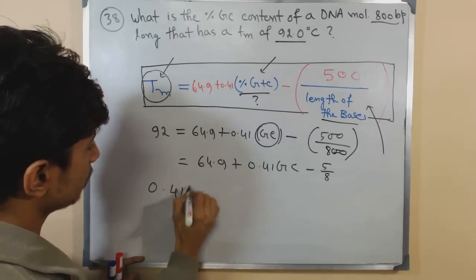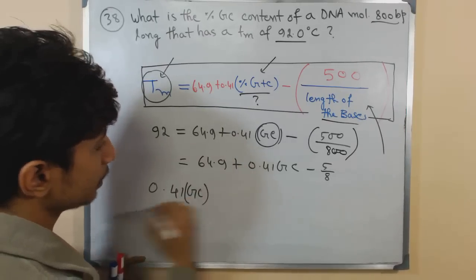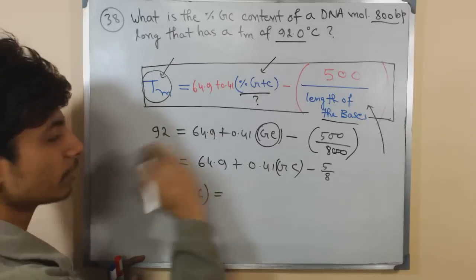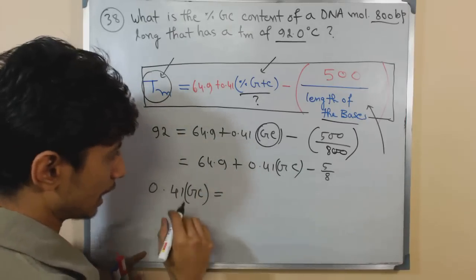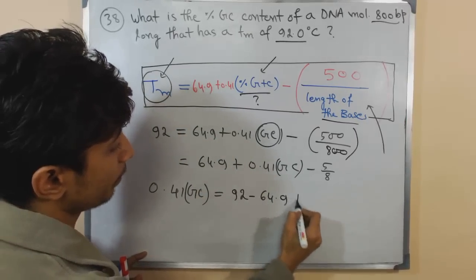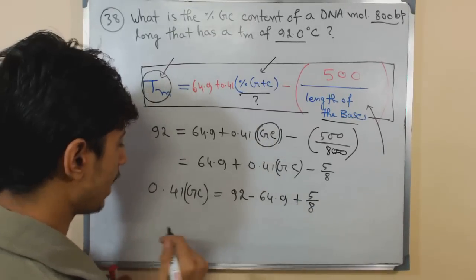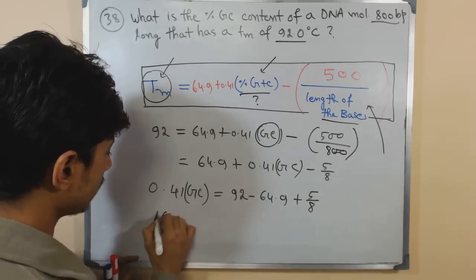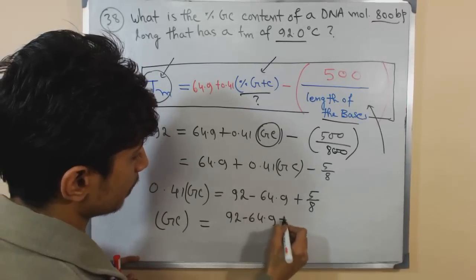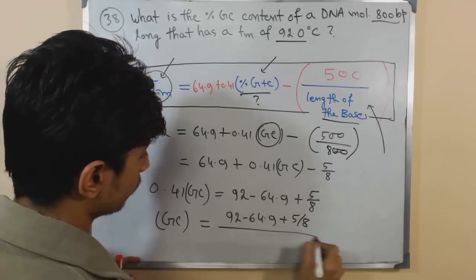Let's take 0.41 GC on one side, equals to, let's take rest of the things on the other side. So it will be 92 minus 64.9 plus 5 by 8. And GC content will be equals to 92 minus 64.9 plus 5 by 8 divided by 0.41.